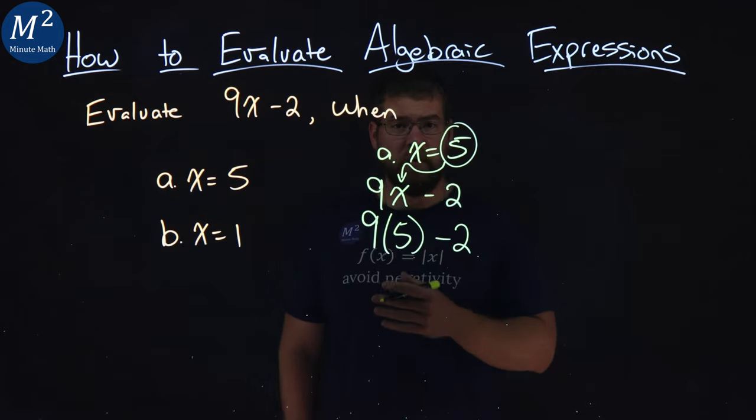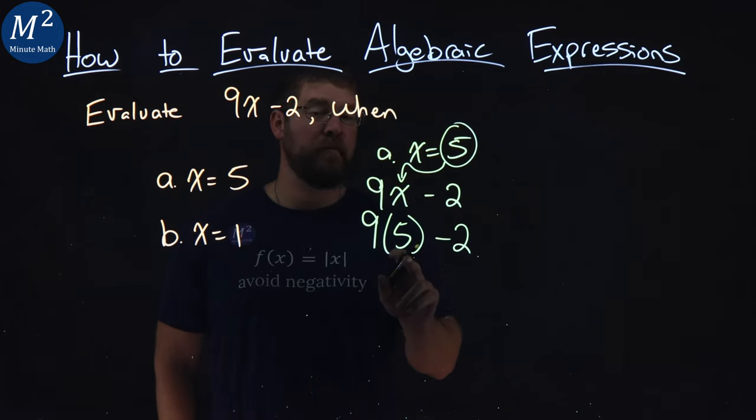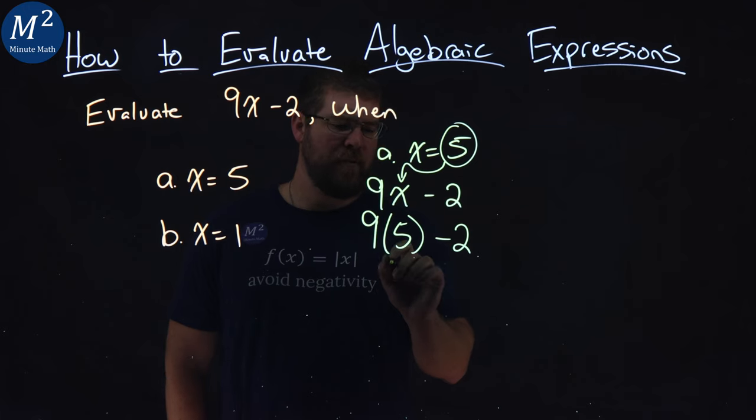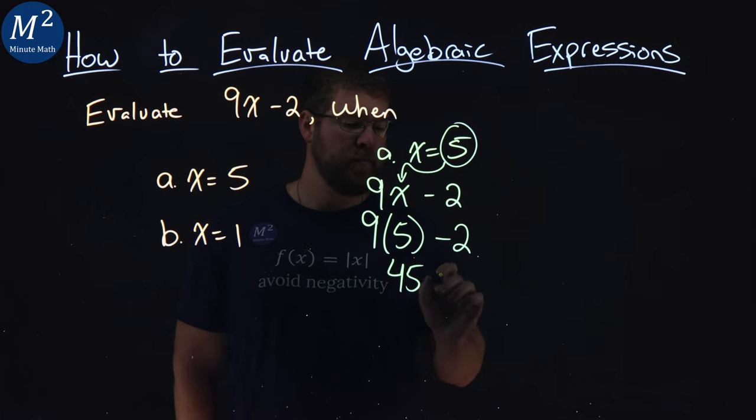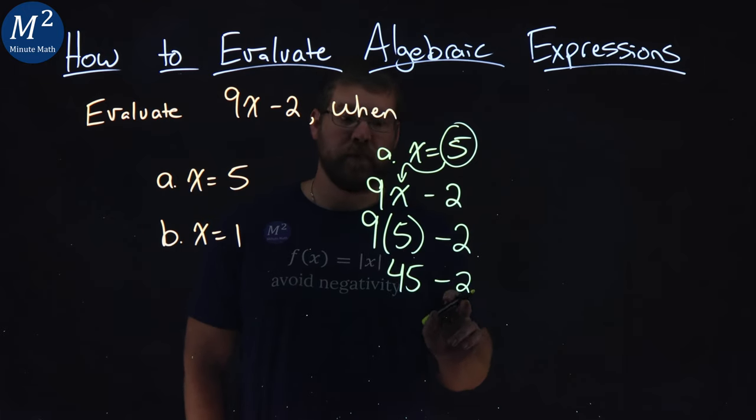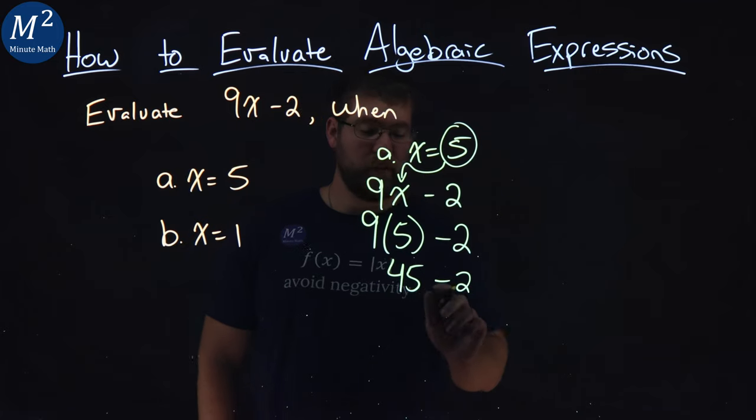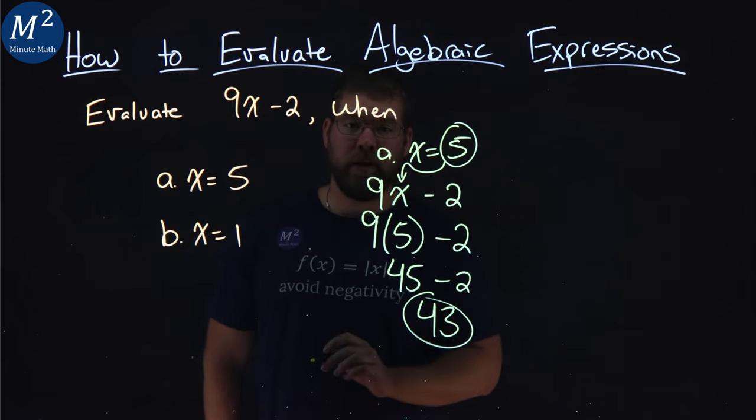From there, we want to simplify using our order of operations. 9 times 5 comes first, and we have a 45 there, minus the 2. 45 minus a 2 comes out to be a 43, and we have our answer.